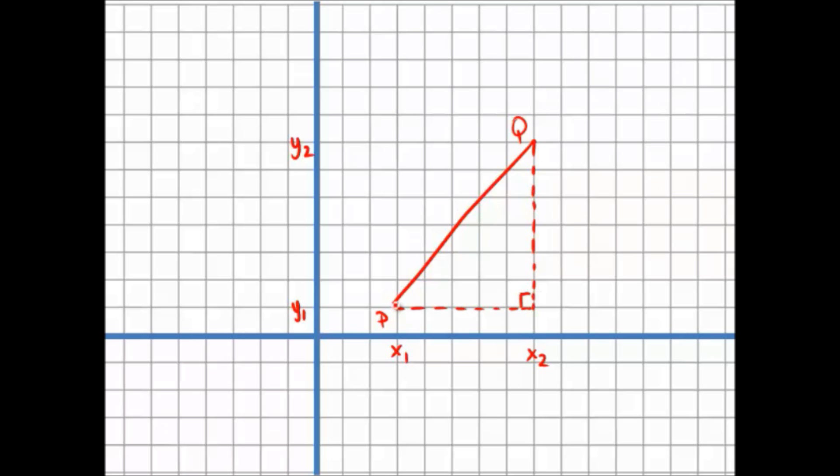How do we find the distance of the horizontal and vertical components of this diagonal line? Well, if you were looking at these as coordinates, this is at 3 and this is at 8.